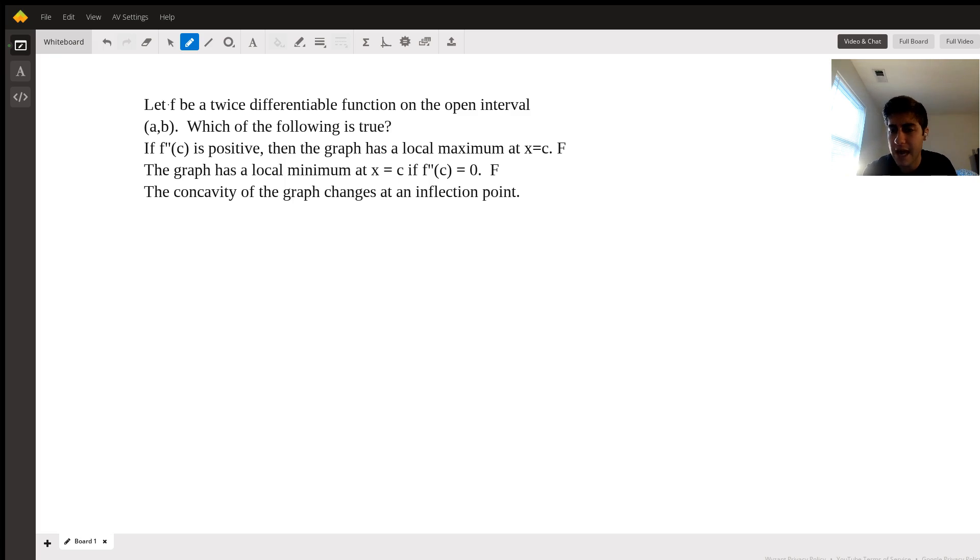But this doesn't necessarily have to be true because we could have a function that is concave down and reaches a point where the slope, maybe right here, it actually stops going down, right?